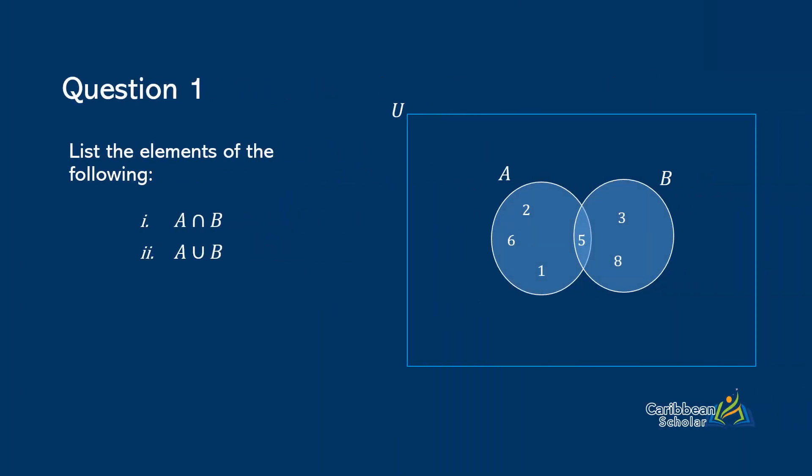Question one. We are given a Venn diagram here with two sets A and B, and the question asks us to list the elements of the following. So we have part one and it asks for A intersect B. So we look over to our Venn diagram and we are looking for where A and B are overlapping. When we look in the overlap we see that there is just number five. So A intersect B is just the set containing the number five.